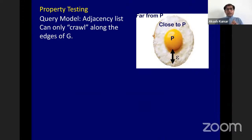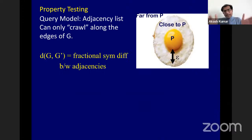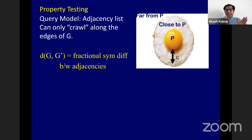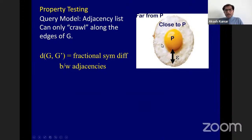I define a notion of distance between a pair of graphs. The distance between two bounded-degree graphs G and G' is the fractional symmetric difference between their edge sets — it's the edge set of G symmetric difference with the edge set of G', divided by n times the degree bound d. The question is: given a graph, is it inside the yellow part (planar), or outside the egg white — must you delete an epsilon fraction of edges to get a planar graph?